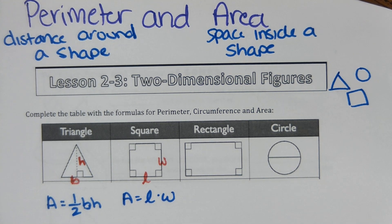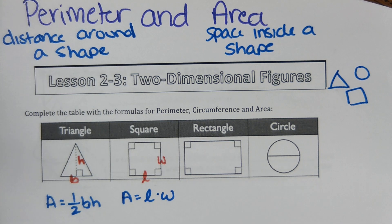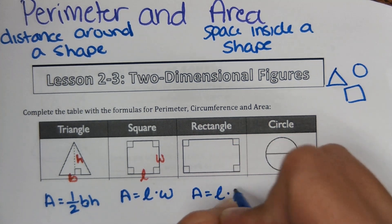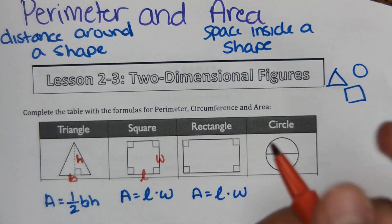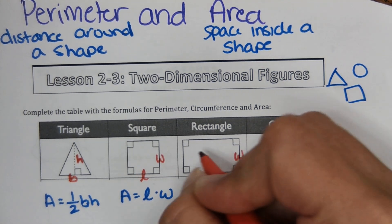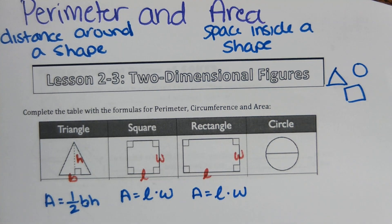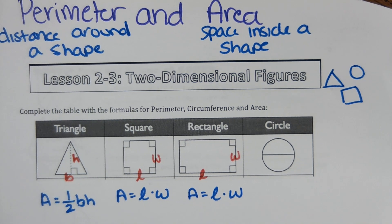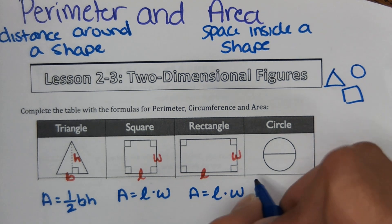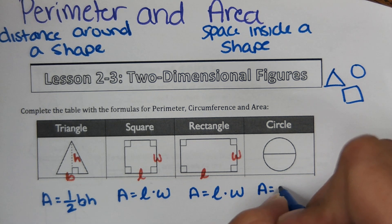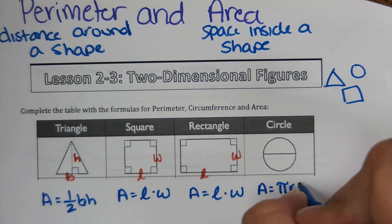For a rectangle, that should be pretty much review — area of a rectangle is length times width, so you just multiply the length and width to find the area. The area of a circle, which we worked with yesterday, is pi r squared.